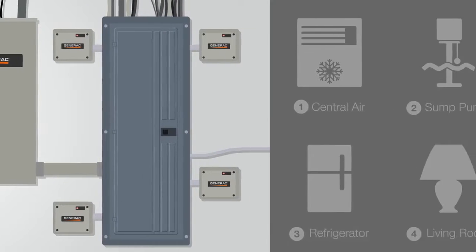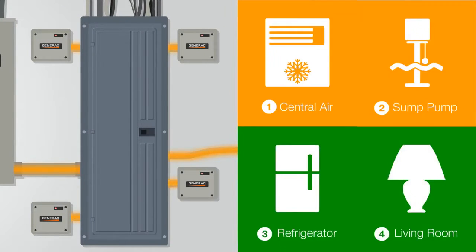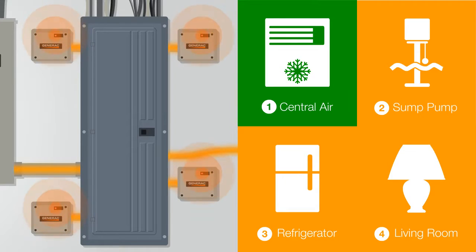So how does this system work? The power goes out and the generator kicks on, providing power to the house. If the electrical demand of the house starts to exceed that of the generator, that's when the smart load management system will kick in.